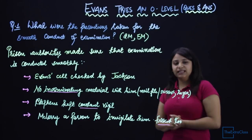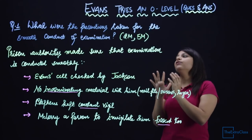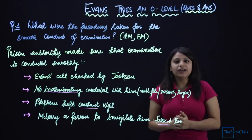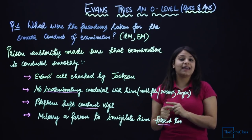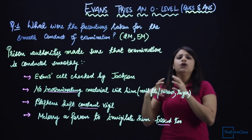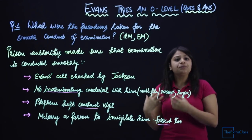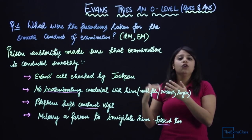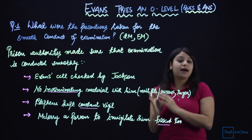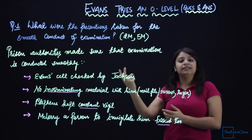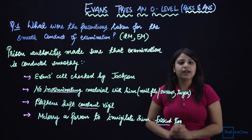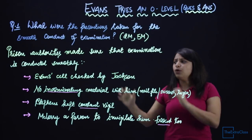The first question from your textbook is: What were the precautions taken for the smooth conduct of the examination? This is a textbook question, but it has come a lot in CBSE board exams — in 2 marks and 5 marks form. The question is slightly modified: 'What were the precautions taken for the smooth conduct of the German examination?' or 'What were the precautions taken by the prison authorities?' This is a very direct question and I am going to tell you what points to write.